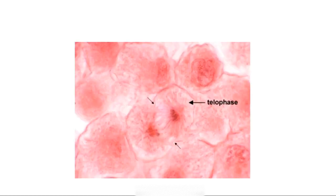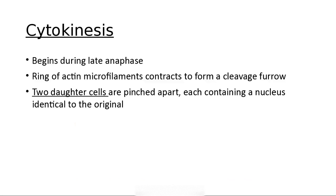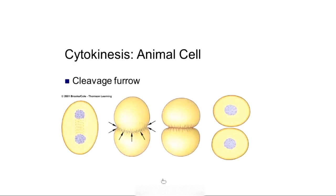In telophase, you have two independent nuclei, but the cell isn't completely divided yet. Then cytokinesis — you actually have a cleavage furrow, which is the division furrow. It's a protein string that gets tighter and tighter and then pops apart, and you have two cells.